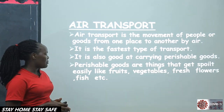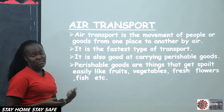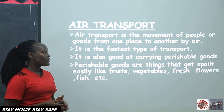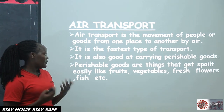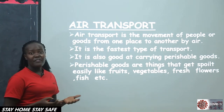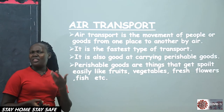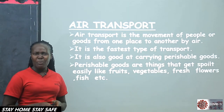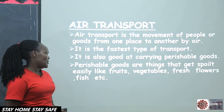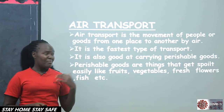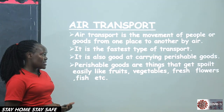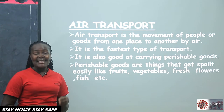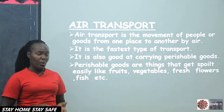What are those perishable goods? They can be fruits, they can be vegetables, fresh flowers, and fish. Think about more goods that get spoiled easily. If you have such things at home, know that they can easily get spoiled.